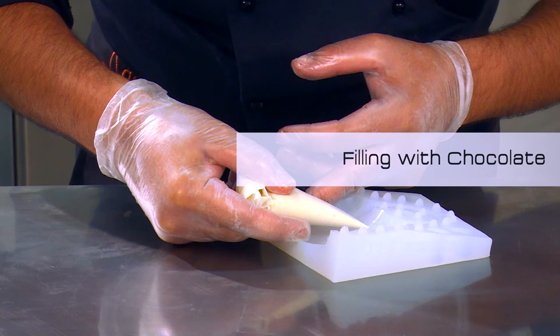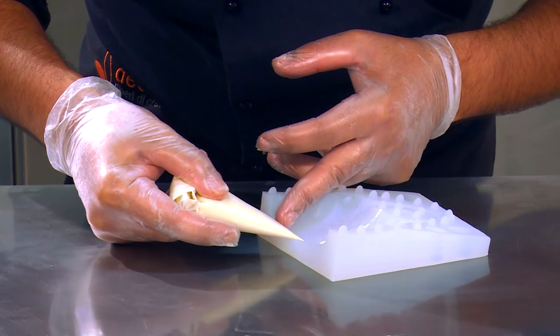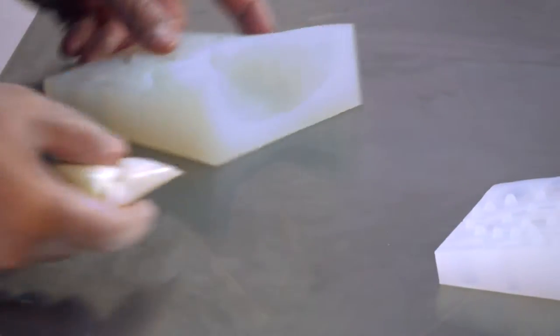Using a piping bag, fill in the details on the silicone mold with pre-crystallized chocolate in order to make an object with a variety of colors.